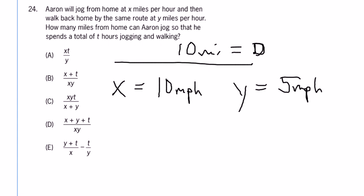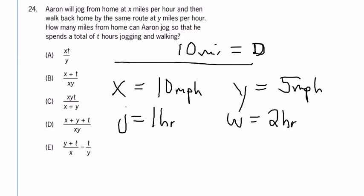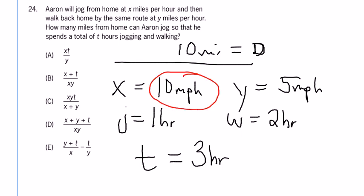Jogging 10 miles at 10 miles per hour means the jogging time is going to be 1 hour, and the walking time is going to be 2 hours. In other words, he spends a total of 3 hours. So x is 10 miles per hour, y is 5 miles per hour, and time is 3 hours.